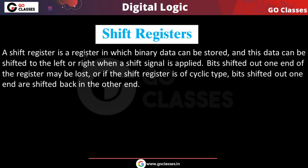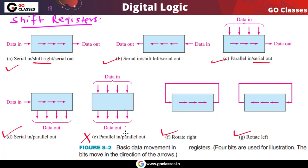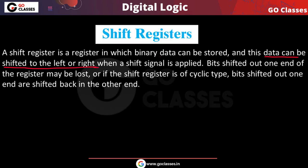The definition of shift register states that it is a register in which data is shifted to the left or right. The parallel in parallel out register is NOT a shift register because there is no shifting. All the other types — except parallel in parallel out — are shift registers.